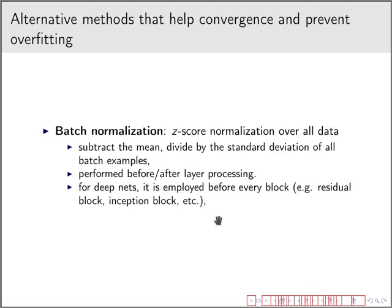Batch normalization is also used. It is basically a Z-score normalization over all data — before using the batch of images, compute the mean of all pixels and the standard deviation, then subtract the mean and divide by the standard deviation. This is performed before or after each layer. For deep networks, it is employed before every block — for instance, before the inception block or the residual block. However, this process is costly, so start by using batch normalization on the input layer, then use it on subsequent layers if needed.